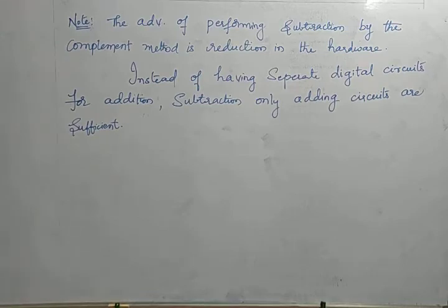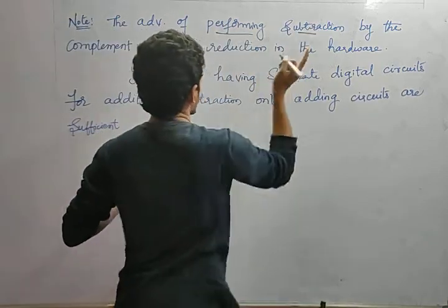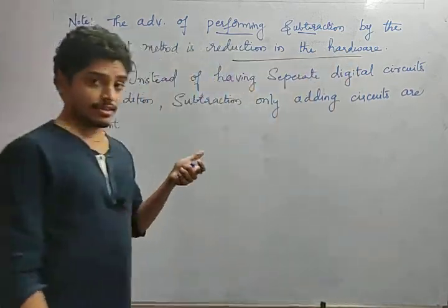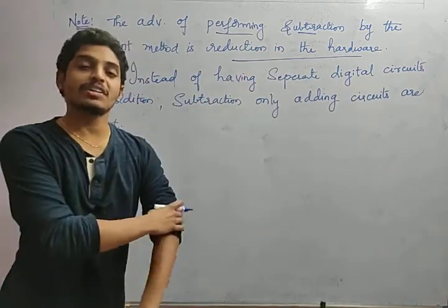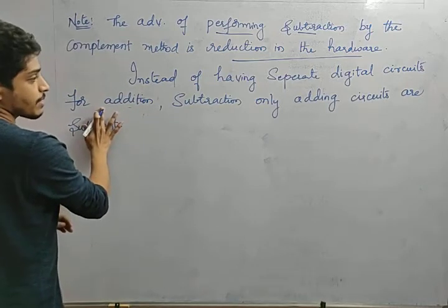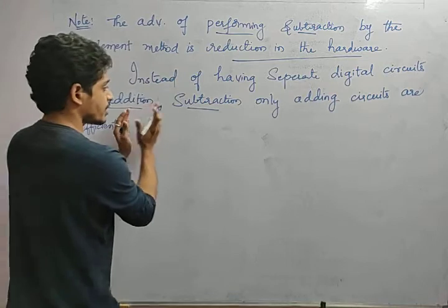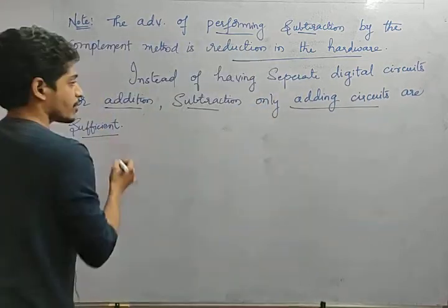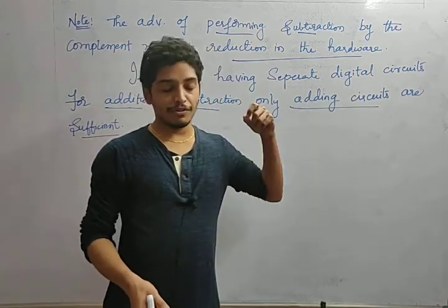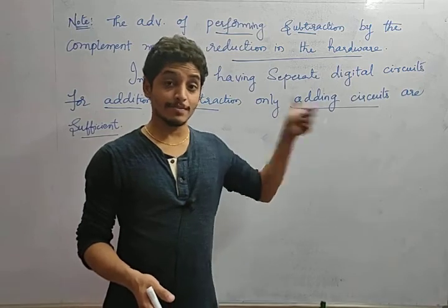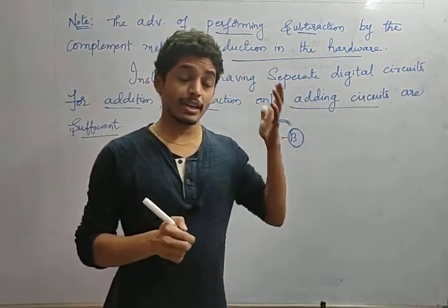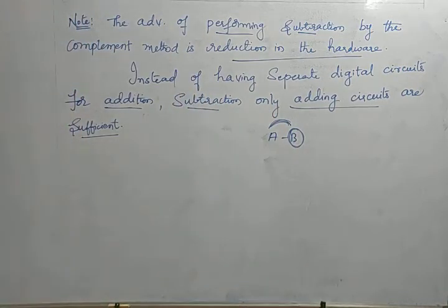The major advantage of performing subtraction using complements is reduction in hardware. Instead of having separate digital circuits for addition and subtraction, only an adder circuit is sufficient. If we complement the subtrahend B and add it to A, we get A minus B directly. There is no need for a separate subtraction circuit, so hardware size decreases — that is the key point.